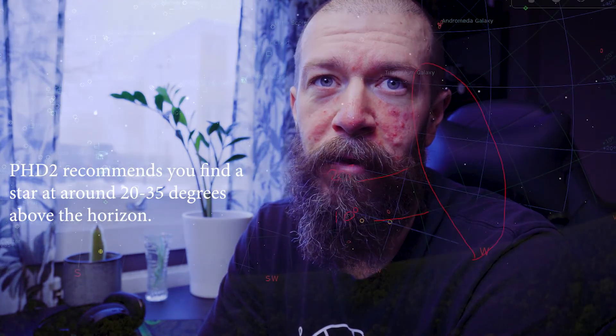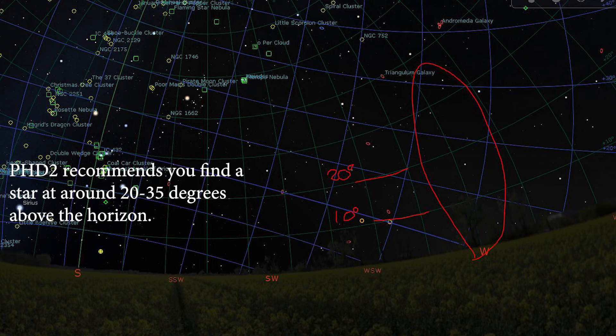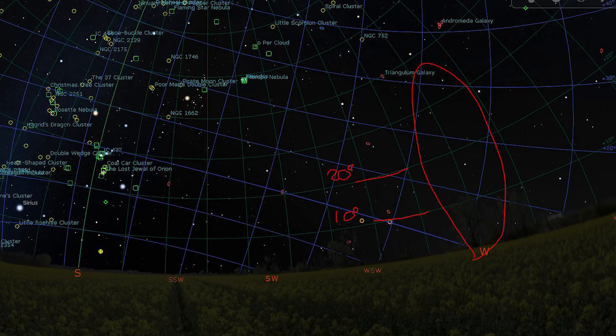That is how you polar align using the drift alignment tool. For the azimuth axis, the approach for the altitude is just the same, except that you are finding a guide star facing east or west about 20 to 35 degrees above the horizon. You are going to watch the declination line — the line indicating how bad your polar alignment is — and adjust with your altitude knobs instead of your azimuth knobs. Try to get the lines as level as possible.